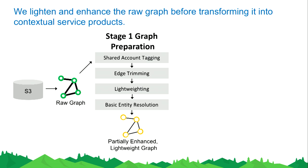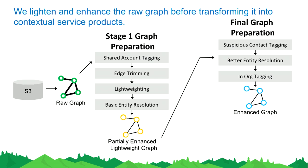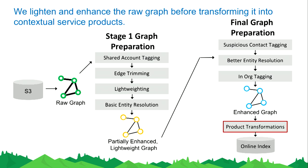Further pipeline steps include suspicious account tagging — for example, if a name looks like a conference room — and deeper entity resolution where we look at two suspected-duplicate contacts' closest connections: if there's strong enough overlap, we can merge them. Finally, in-org tagging makes a strong distinction between people who are in the customer's organization versus out-of-org people they're selling to. From all of that we get an enhanced graph, then do product transformations, and populate the online index.